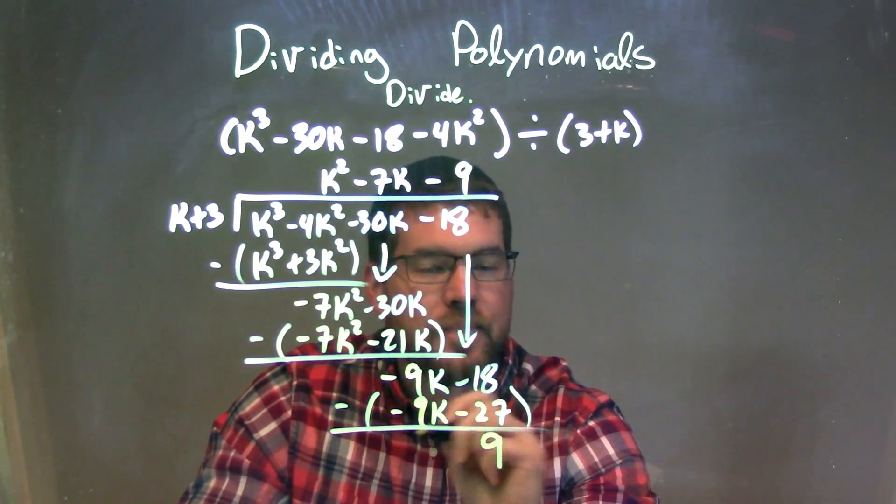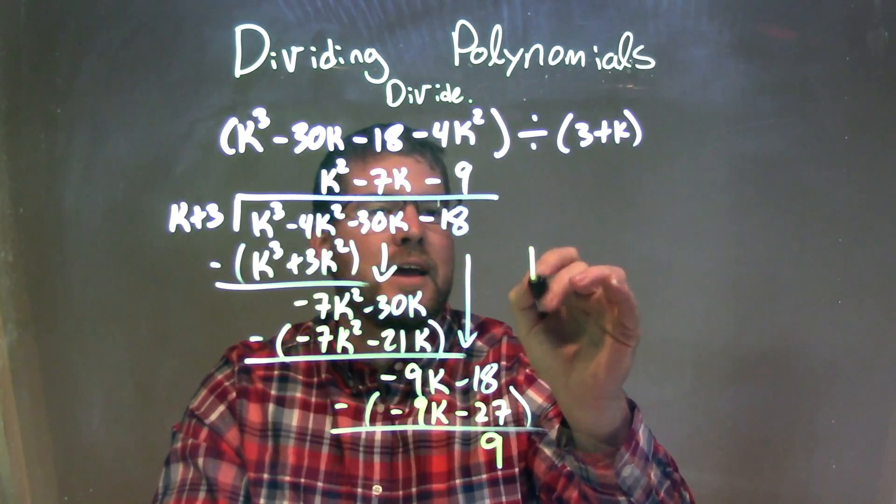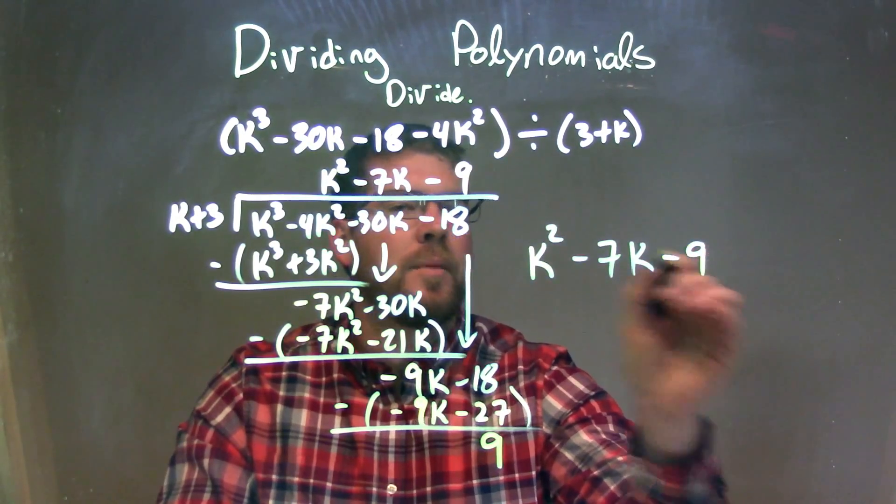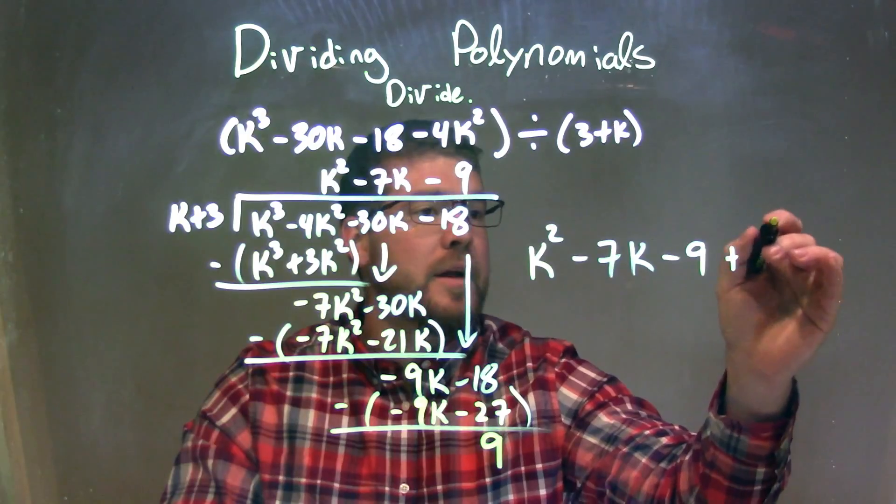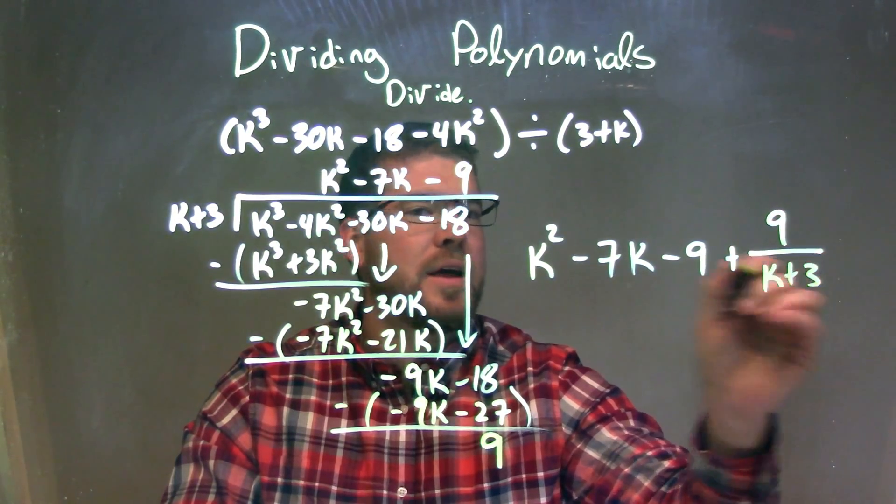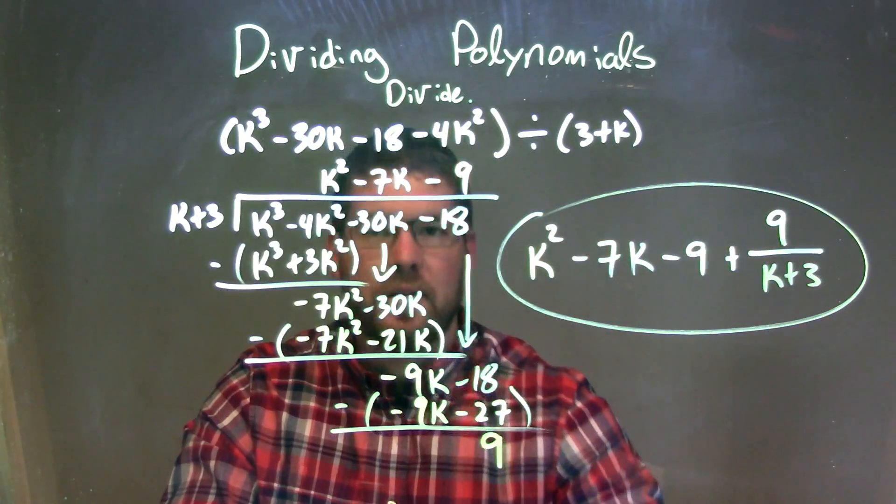That positive 9 is my remainder right here. So my final answer is that k squared minus 7k minus 9. That's right up there. Plus my remainder, this 9, over my divisor, which is k plus 3. And that is my final answer.